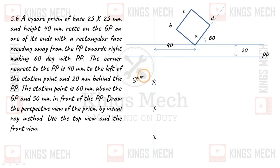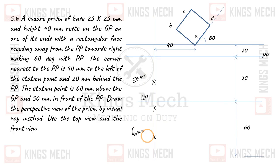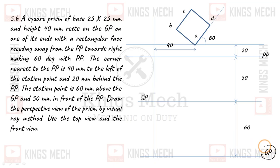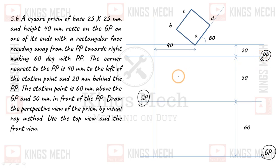The station point is 50mm above GP and 60mm in front of VP. Project that line 50mm or 60mm. That is your ground plane. The ground plane is 60mm from the station point. This is the picture plane.